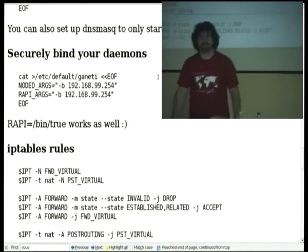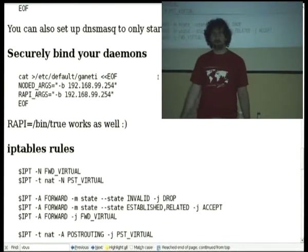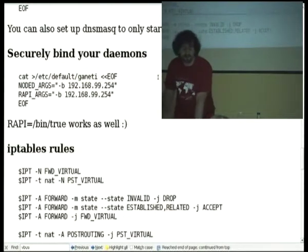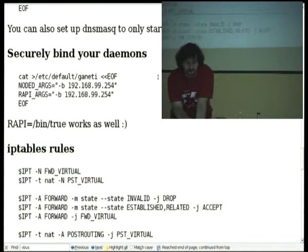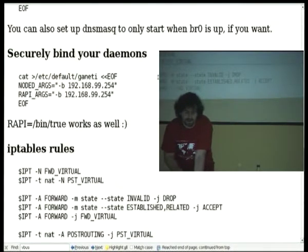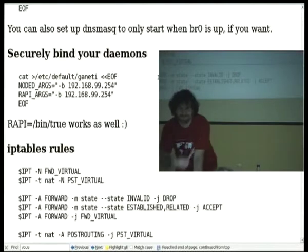You want to securely bind your daemons. You don't want your Ganeti daemons, which happen to be running as root, on the network. Your laptop is usually connected to conference networks and things, so you don't really want that. You're just going to bind node daemon and the RAPI to the local address on the br0, which is not connected to the Ethernet network. You'll need some iptables rules later because you'll have to enable forwarding for the instances to actually work. Another trick is to set default Ganeti RAPI equals /bin/true, which actually kills RAPI.